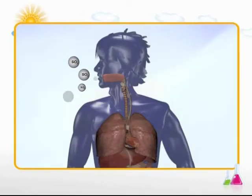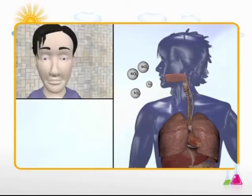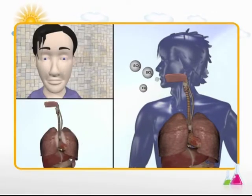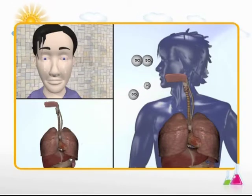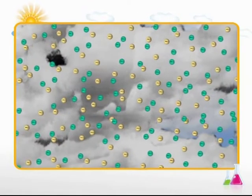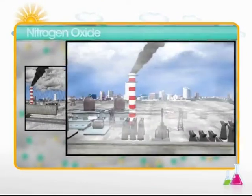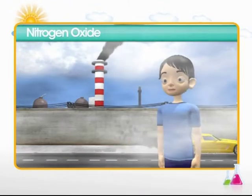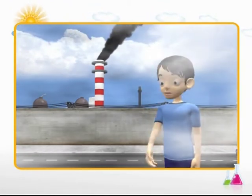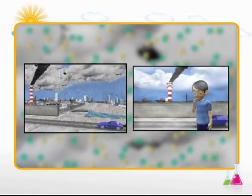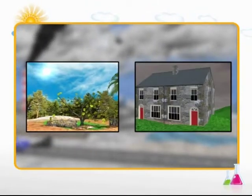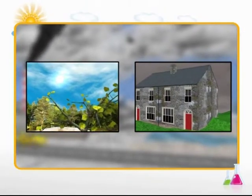Sulfur dioxide is a stinking gas which causes irritation to the eyes and affects the lungs, causing respiratory problems. At significantly higher concentration, it causes bronchitis and inflammation of the lungs. Nitrogen oxides are mainly responsible for smog and acid rain. Smog causes breathing difficulties, particularly for asthmatics, coughing in children, and other illnesses of the respiratory tract. Acid rain not only poses health threats but also damages buildings and harms vegetation.